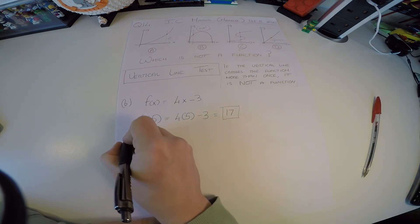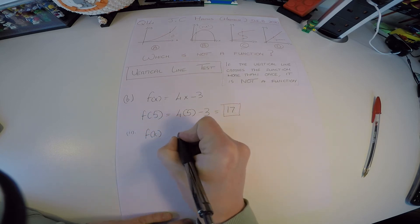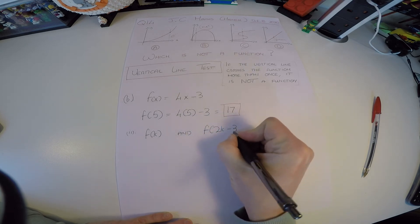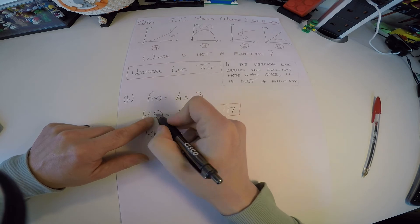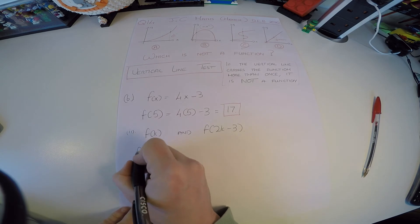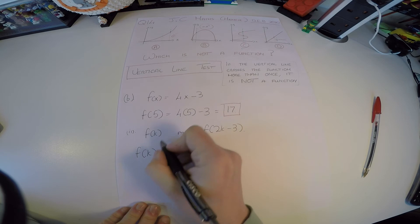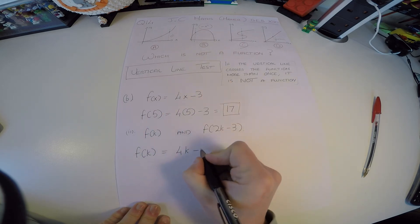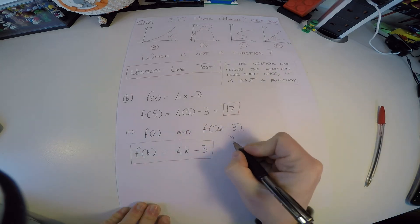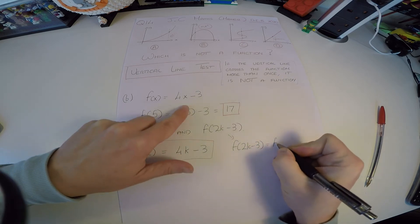And then part 2 of B, it says write f of k and f of 2k minus 3. Now, just like I replaced x by 5 here and replaced x by 5 in the function, the answer is the exact same here. So for f of k, I simply say 4 times, I've replaced x by k, so replace this x by k, 4 times k minus 3. That's the first one. And then f of 2k minus 3 is going to be no different.